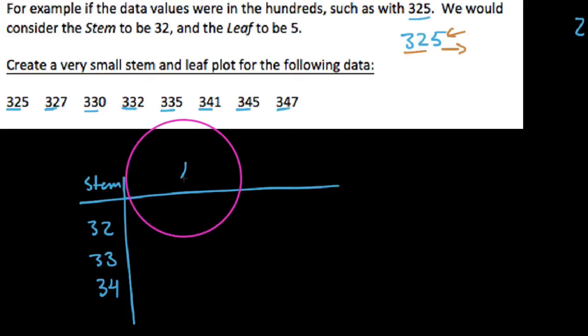All we need to do now is go and put in our leaf portion of this, and so we could say that really when we represent this, we get 325. And we get 327. And I don't have anything else that lives in the 320 range, so check, check.